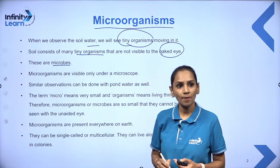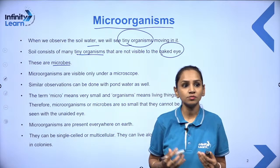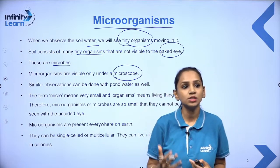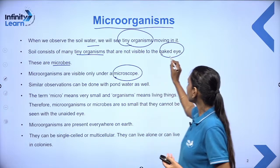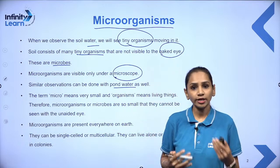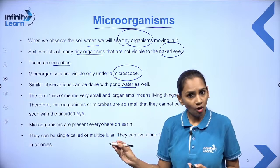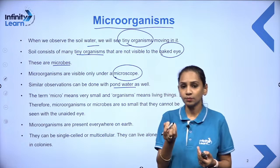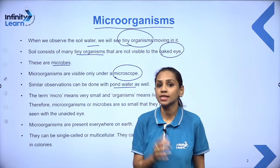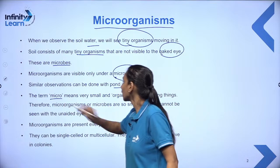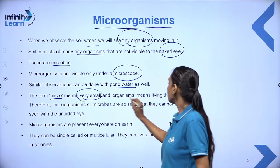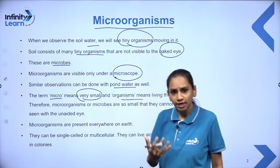These tiny organisms are microbes. Microorganisms are those kinds of organisms which are visible only under a microscope, because they are very, very tiny — we cannot see them with our naked eyes. Similar observations can be done in pond water as well. If you take one drop of pond water and observe it under a microscope, you will be able to see these tiny organisms. The term 'micro' means very small, and that is why these organisms are called microorganisms.